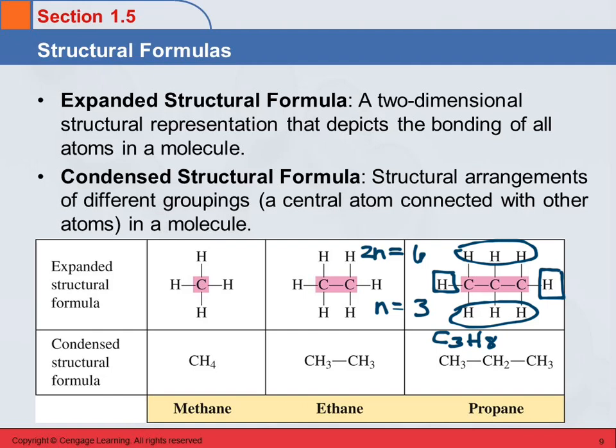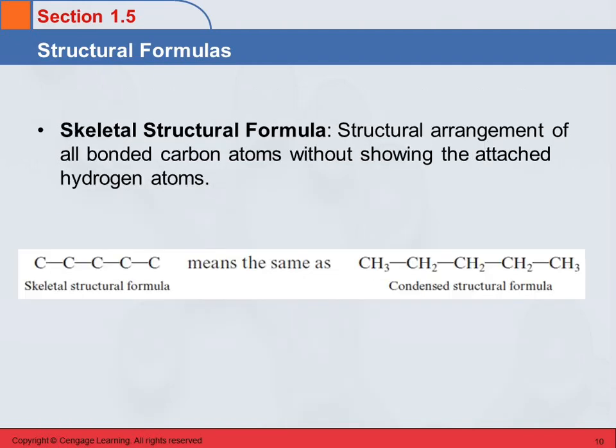We're going to use these different types of formulas all throughout the semester and you need to understand what they're meaning. It'll take a little practice at first. Then we have what's called a skeletal structural formula. What's the difference between a human body and a skeleton from a human body? The skeleton is just the bones, right? All the muscles and the skin and stuff isn't there. A skeletal structural formula is looking at just the carbons.